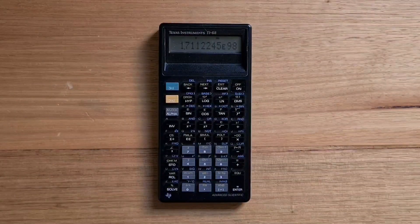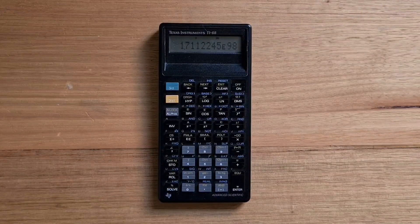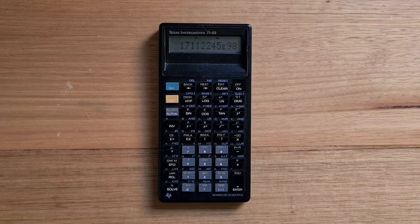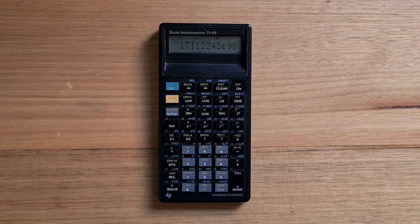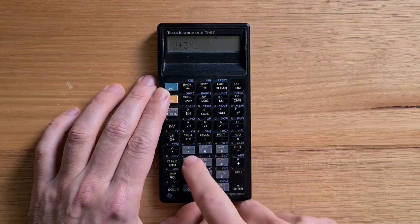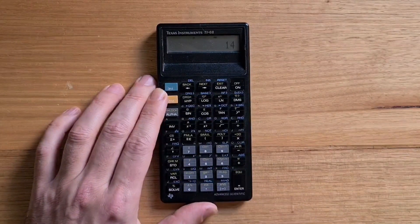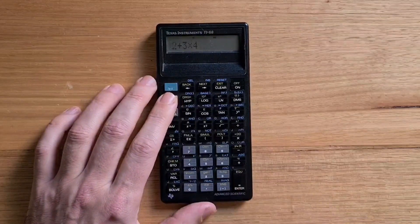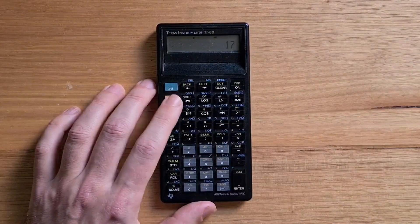The TI-68 is the first TI calculator that supported the equation operating system rather than the previous arithmetic operating system. With the EOS you can edit and enter a full arithmetic formula. So if I enter 2 plus 3 times 4, I can view the whole expression, then hit equals. And if I hit the yellow shift and enter, I can go back and edit that equation and re-evaluate.